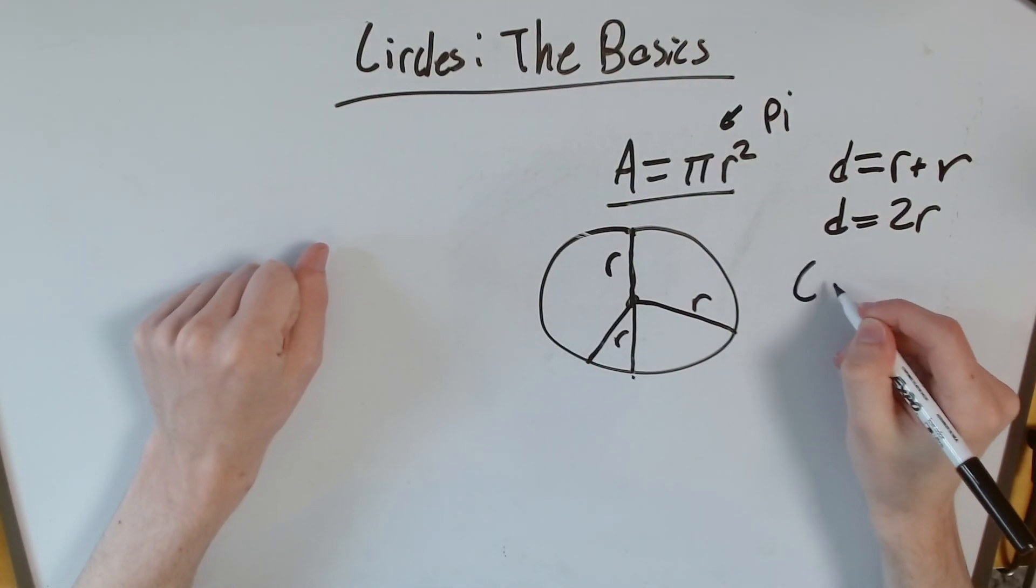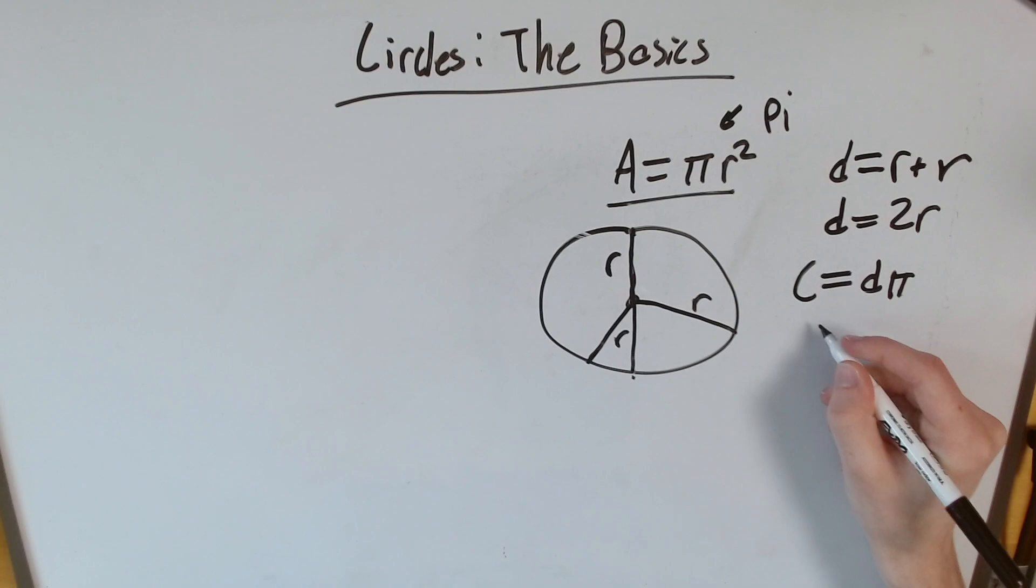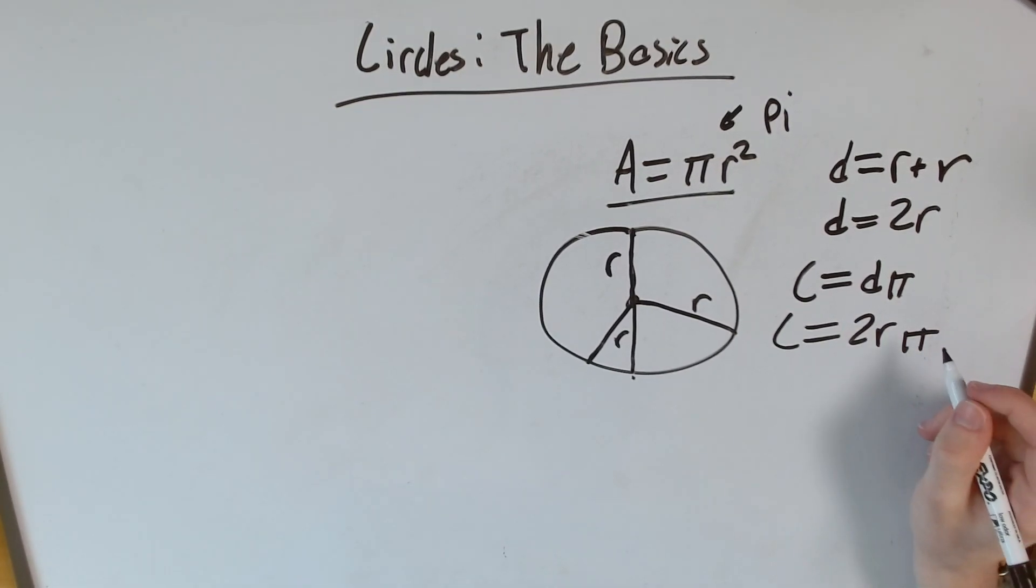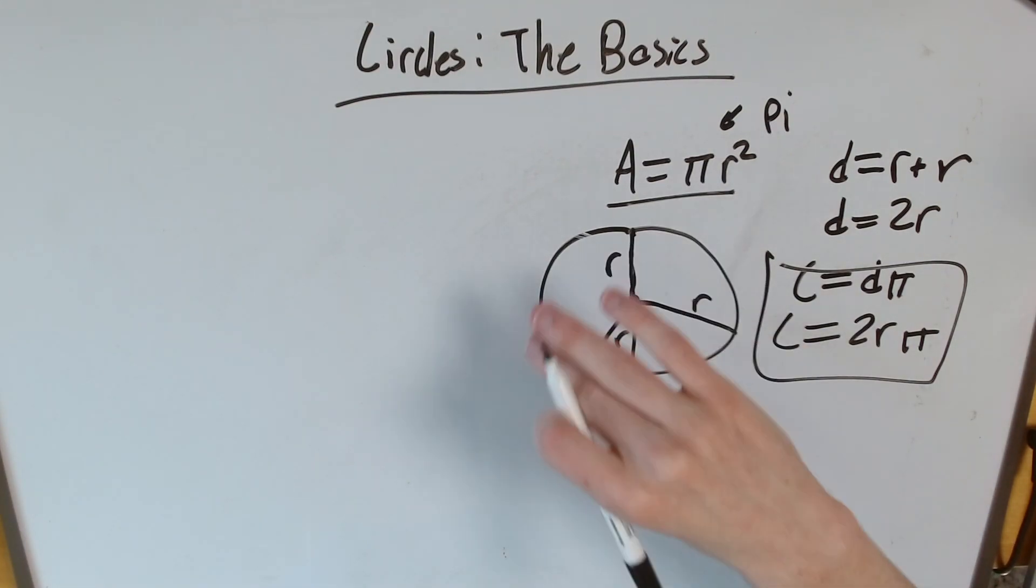And the circumference is equal to the diameter times pi, or if you want to put it in terms of radius, 2r times pi. So area, kind of obvious—what's inside the circle? Circumference, the length of that external side.